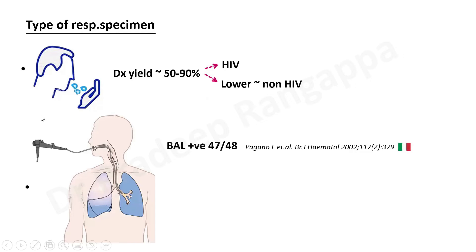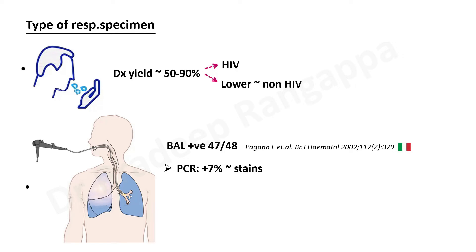The next option is bronchoscopy with BAL. A study from Italy looked at 48 patients with suspected PCP and found BAL yielded PCP on staining in 47 of them — so BAL is a good way to go. In our patient, he was on 70% oxygen with intermittent NIV and HFNC, so the risk of intubation was very high. Our pulmonologist felt the risk outweighed the benefit, and the family also did not want him pushed to ventilation. Adding PCR to BAL increases the yield by an additional 7% over standard BAL staining.